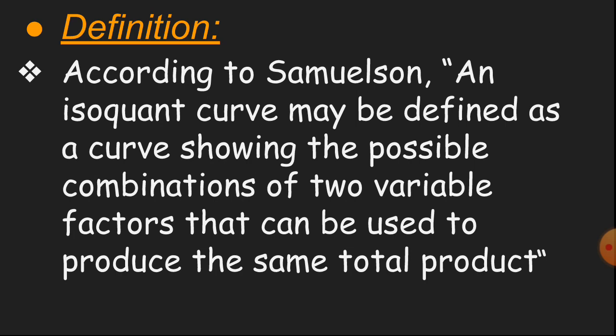According to Samuelson, an isoquant curve may be defined as a curve showing the possible combinations of two variable factors that can be used to produce the same total product.